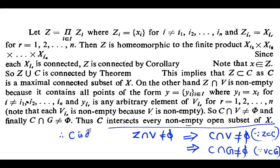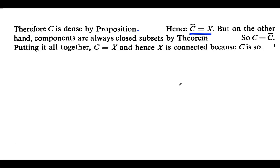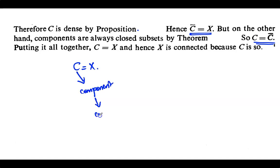Therefore C is dense in X by the characterization of dense subsets, hence the closure of C equals X. On the other hand, components are always closed, hence C = closure of C. Putting these two equations together, C = X. Since C is a component it is always connected, therefore X is connected. Thus we have proved that whenever the coordinate spaces Xi are all connected, the product space X is also connected.